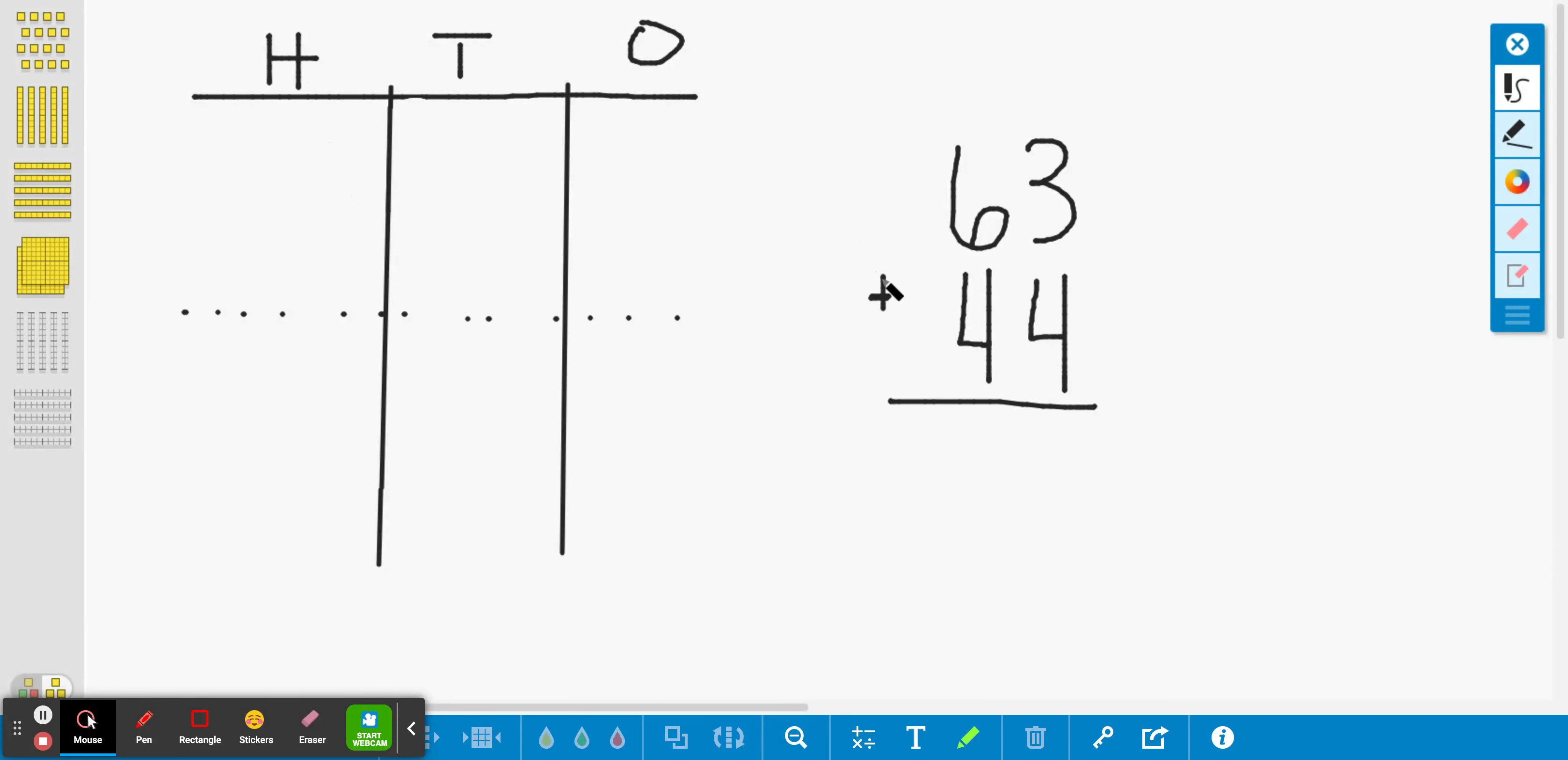So when we add, we always model both numbers. So I'm going to model 63 by doing six tens and three ones. I'm going to do one, two, three, four, five, and I'm going to move the other six one right there. Leave a little space, which lets me know I have five, and one more makes six.